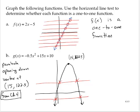So once you see a horizontal line that hits more than one point on the curve, you immediately know that that function is not one-to-one. So this function, g of x, is not a one-to-one function.